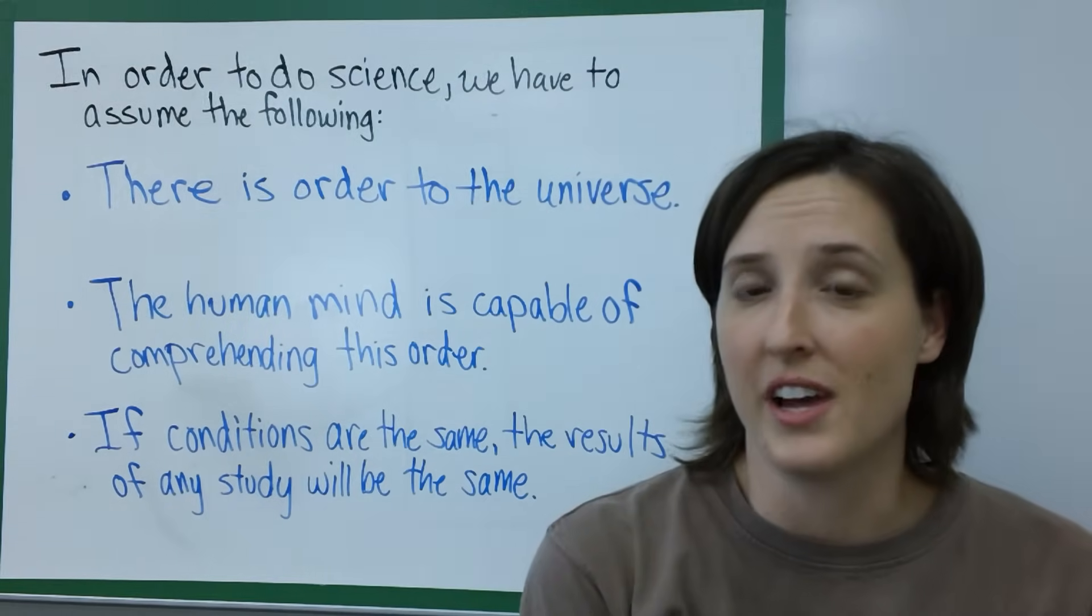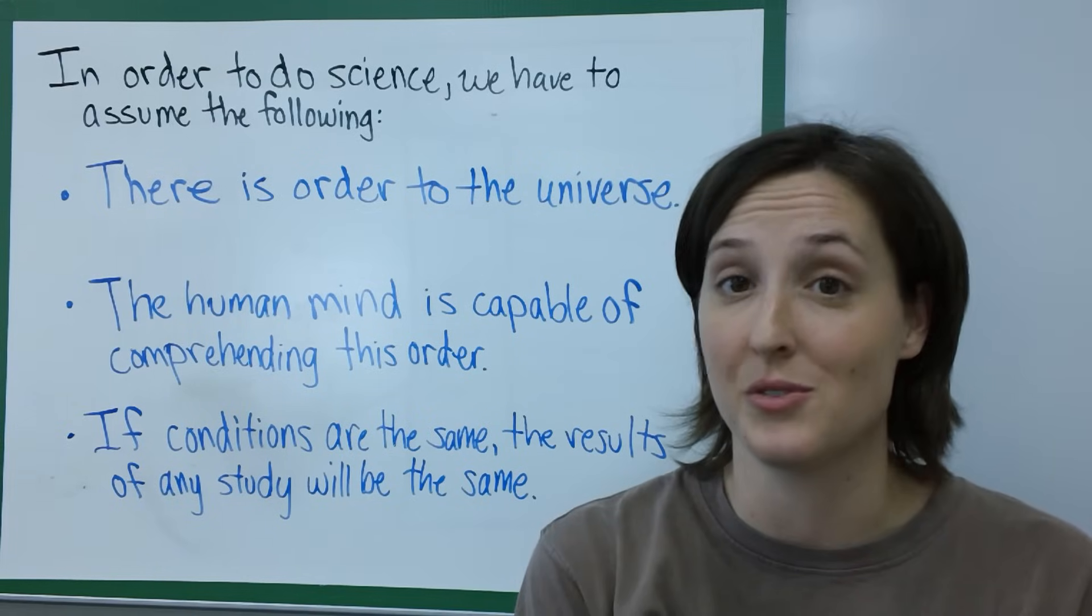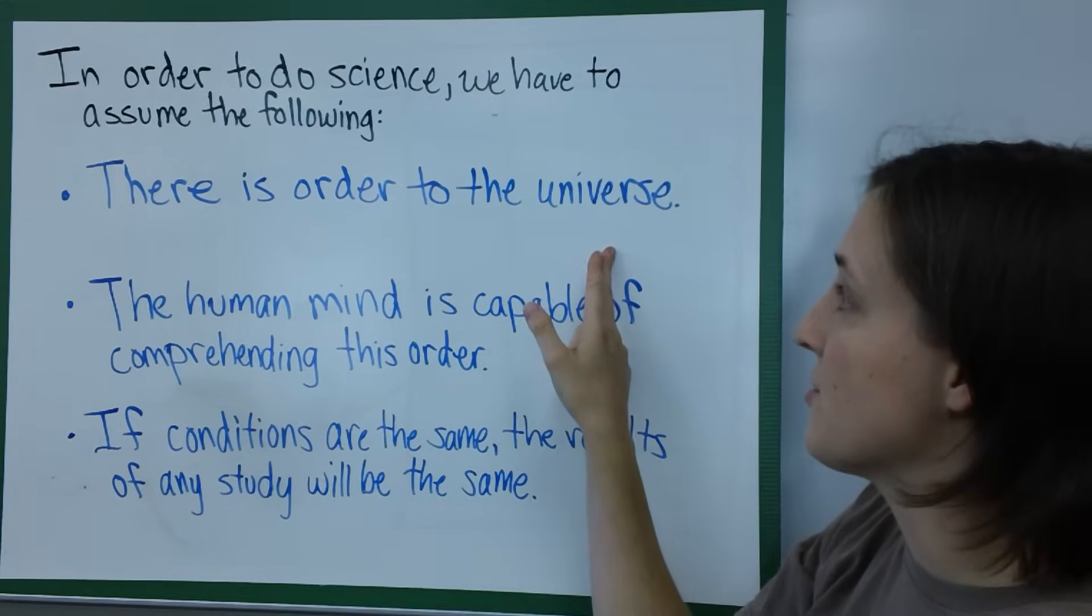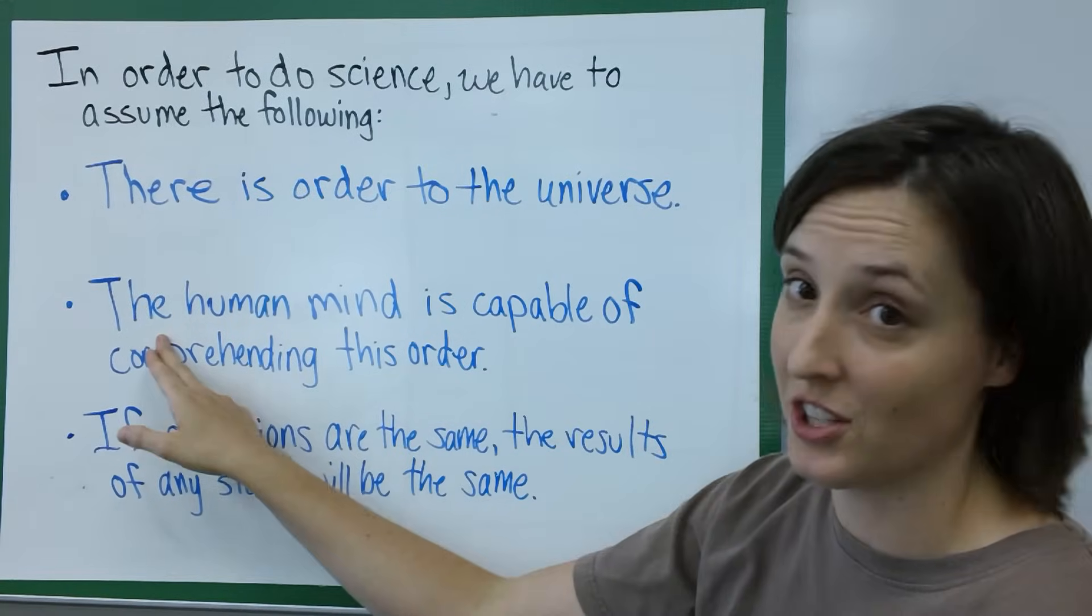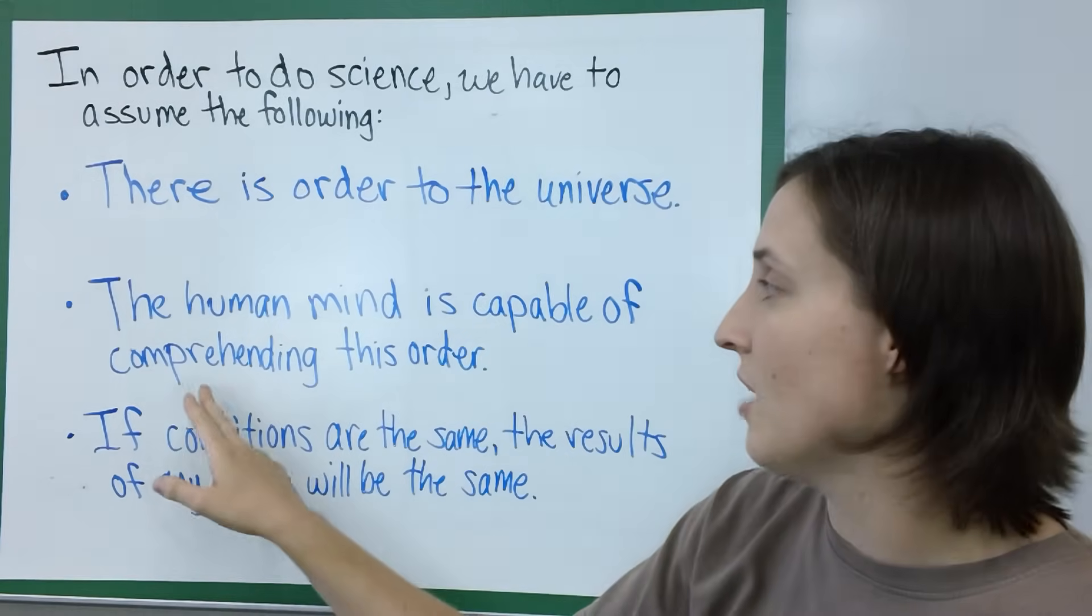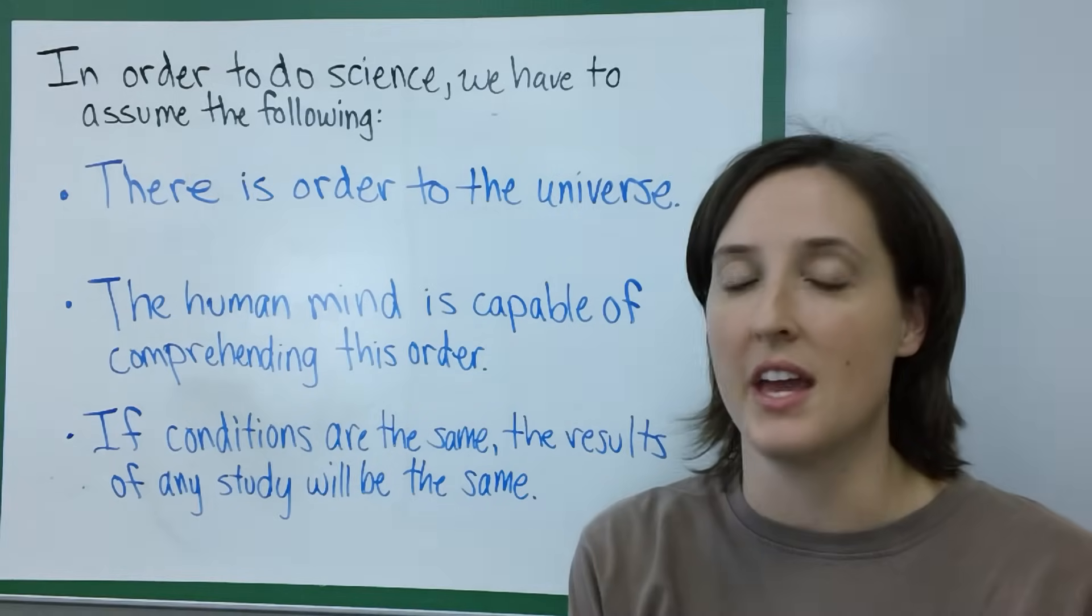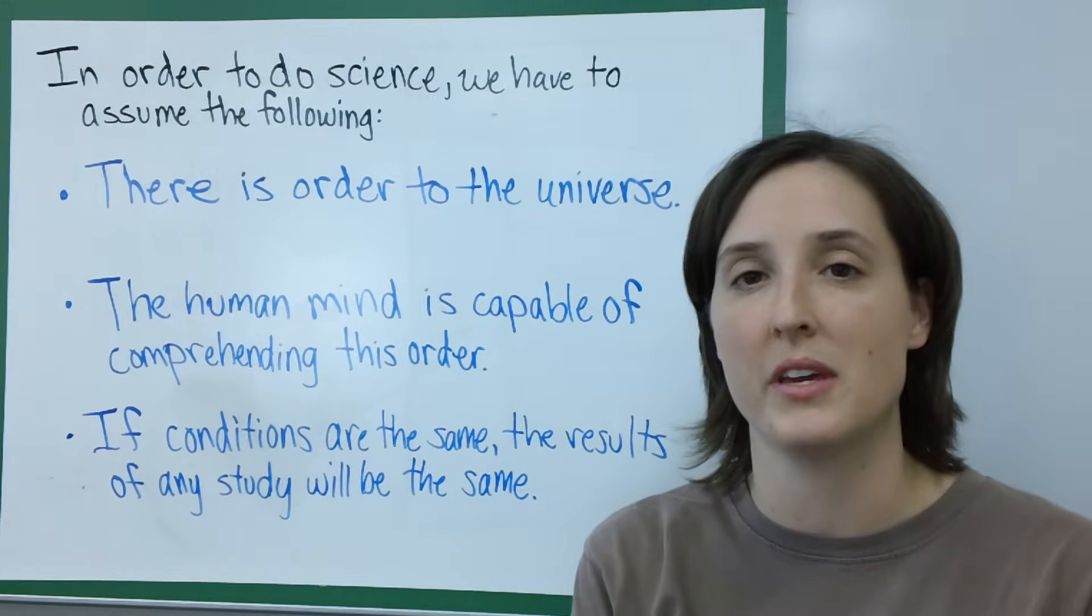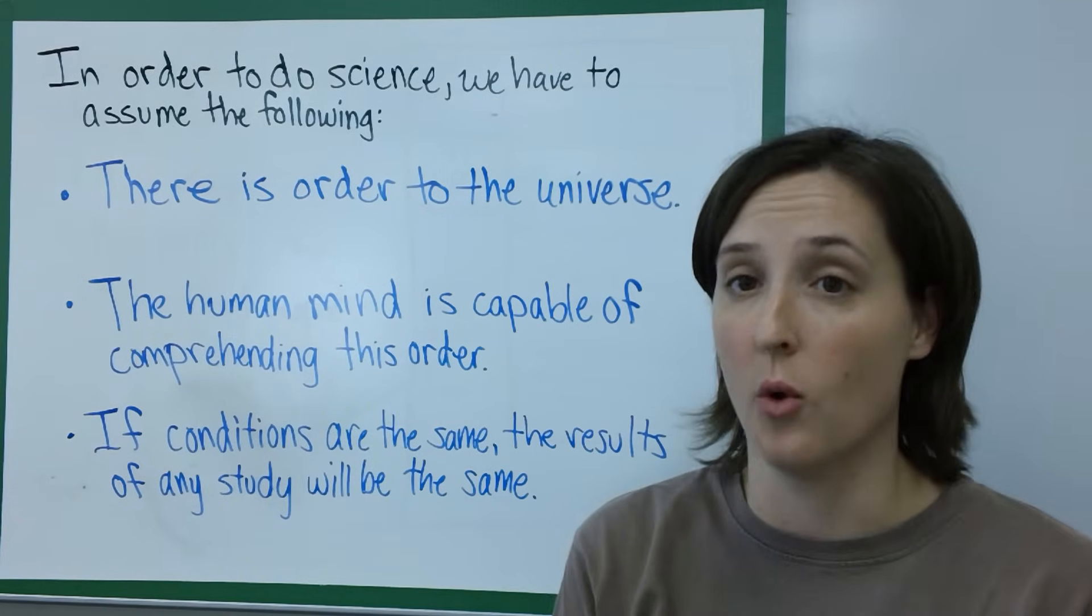Now in order to do science, we have to make a couple of assumptions. If we don't make these assumptions, we can't do science. We have to assume that there is order to the universe. If there's order to the universe, logically, the human mind is capable or should be capable of comprehending this order. So if we can assume that yes, there is an order to the universe and everything is set up in a certain way, hopefully as human beings we should be able to explore and thoroughly understand that order.